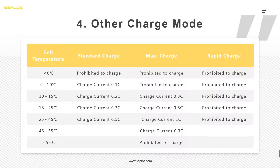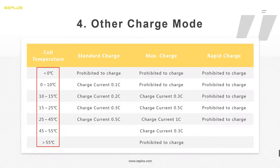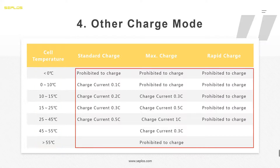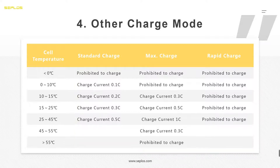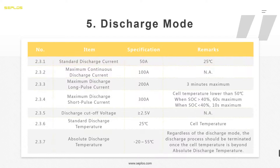Many people design the BMS charging current as they want and do nothing to protect the battery. They just know the cell is 1C charging and 1C discharging and pay no attention to charging temperature. From this data sheet we show the right way to charge the battery at different temperatures. When you design your BMS, you need to know your charging temperature first, then set your BMS charging current correctly — or you can manage the charging temperature through a heating or cooling system.